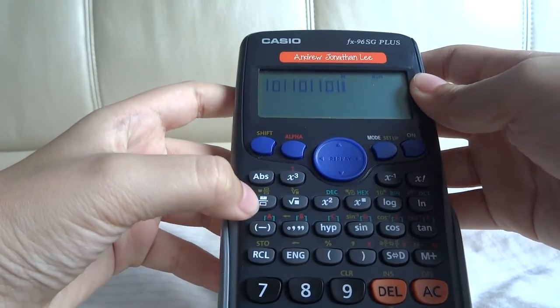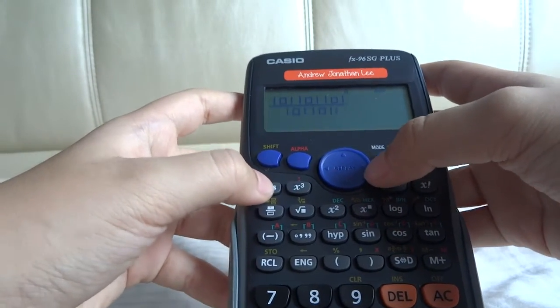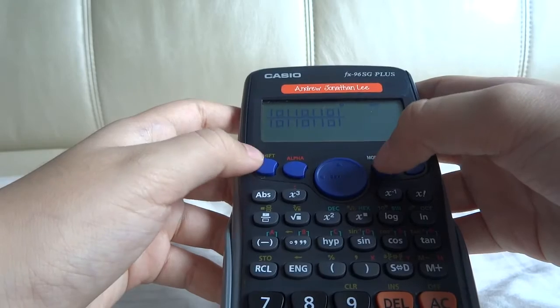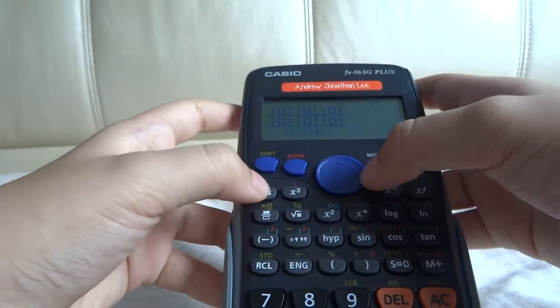Press this fraction button. Type in absolute, press right, and do that again. And then type another fraction, and then absolute, absolute, absolute.